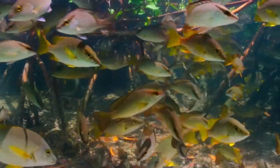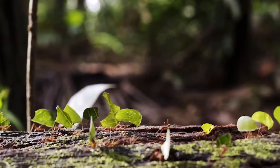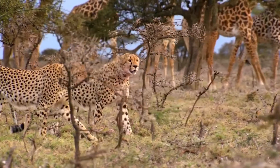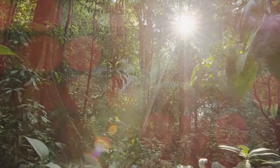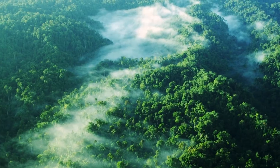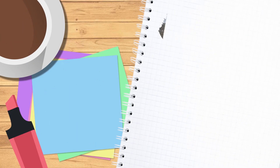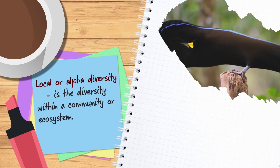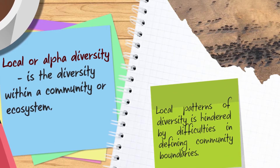Ecosystem diversity deals with the variation in ecosystems within a geographical location and its overall impact on human existence and the environment. It is a type of biodiversity, representing the variation in ecosystems found in a region or across the whole planet. Local or alpha diversity is the diversity within a community or ecosystem, though local patterns of diversity are hindered by difficulties in defining community boundaries.